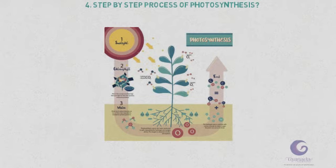Step three: chlorophyll, the green coloring matter of the leaf, traps the energy from sunlight as it shines on the leaf. It is worth noting that it is chlorophyll that gives the leaf its green color.